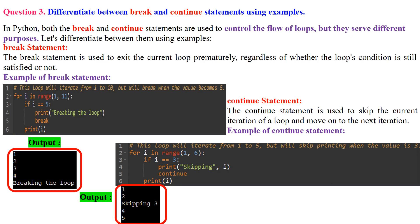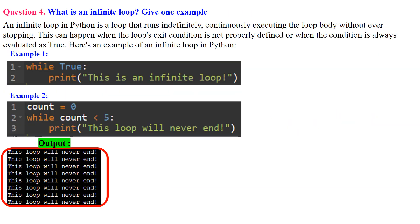The continue statement skips the current iteration and moves on to the next. In this example, a for loop iterates over values 1 to 5. When i equals 3, 'skipping 3' is printed and the continue statement skips the rest of that iteration. When i is not 3, the value of i is printed normally. As a result, the continue statement causes the loop to skip printing 3 and proceed to the next iteration, printing the other numbers as usual.